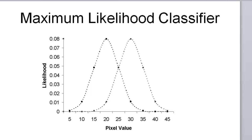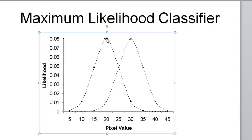We'll use a maximum likelihood classifier to predict the cover type of every pixel in our image based on the training polygon statistics. The idea is that we assume a bell-shaped or normal distribution for every training polygon. For example, one polygon peaks at a mean of 20, so the maximum likelihood that a pixel belongs to it is if that pixel has a value of 20, as opposed to another polygon that peaks at a value of 30. We use that maximum likelihood classifier to assign each pixel to the class it most likely belongs to.